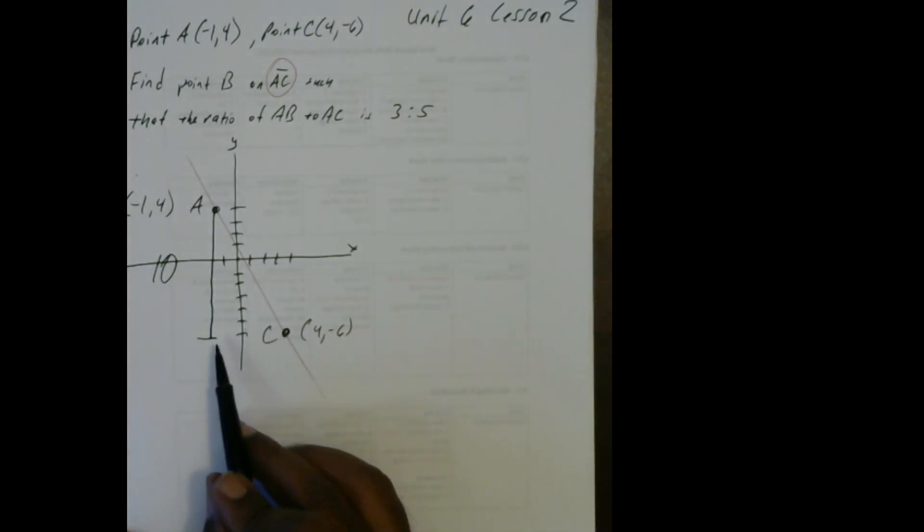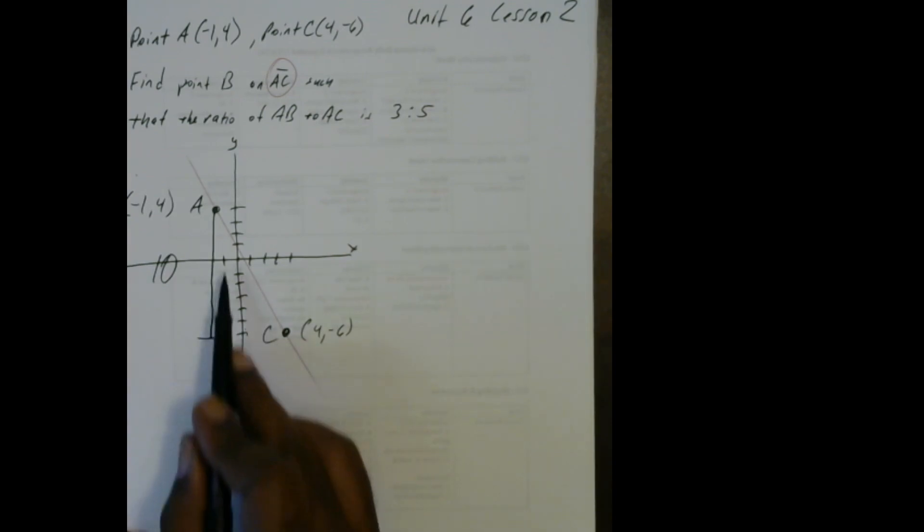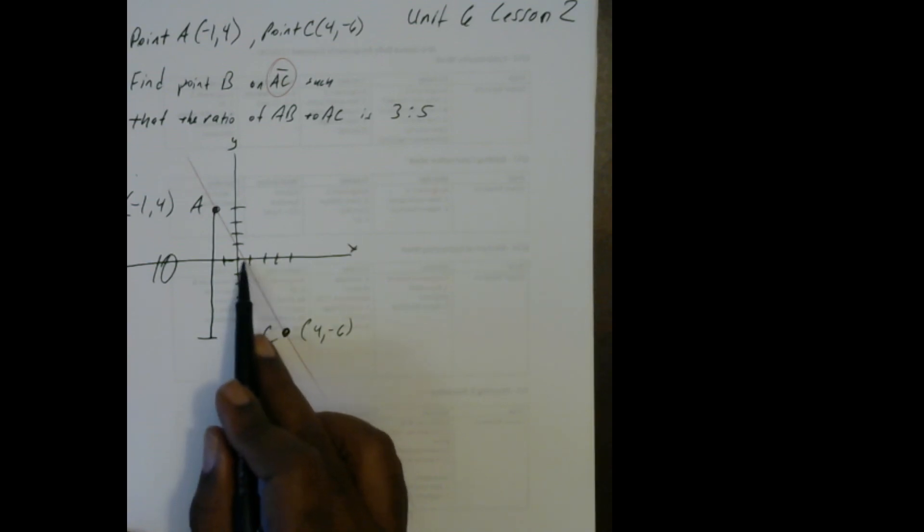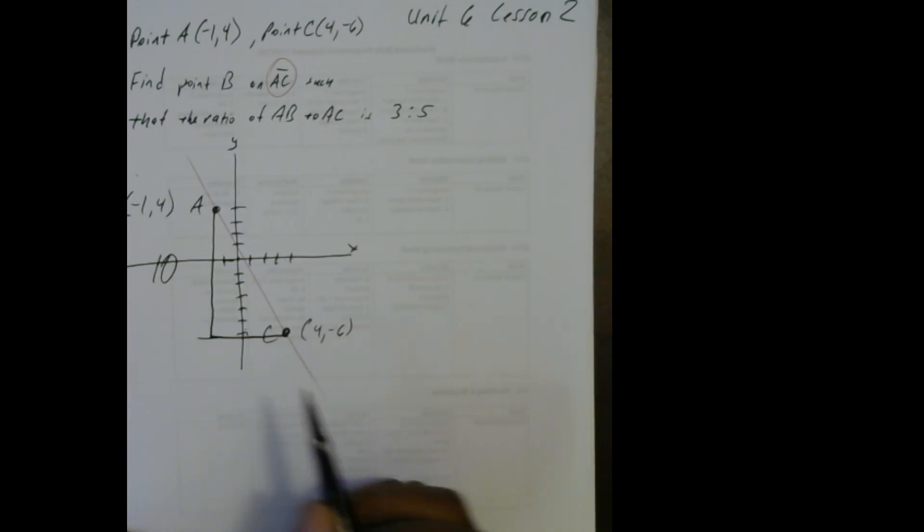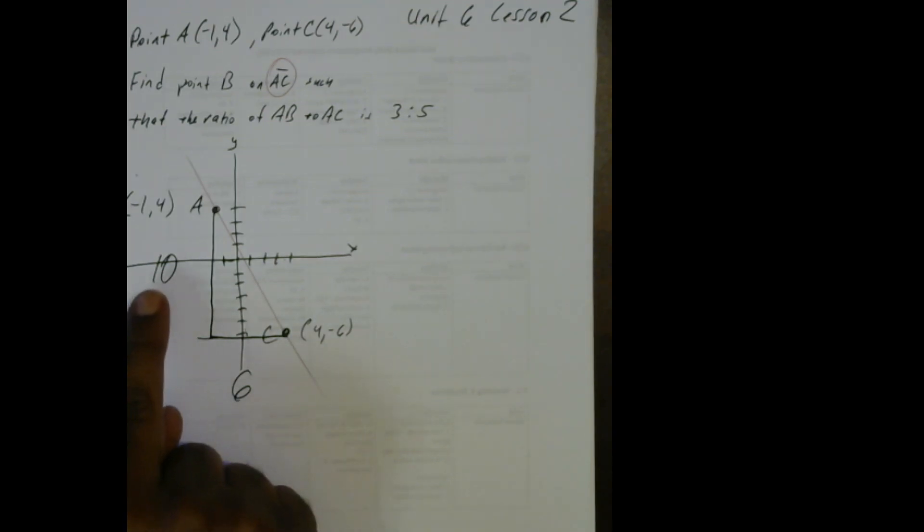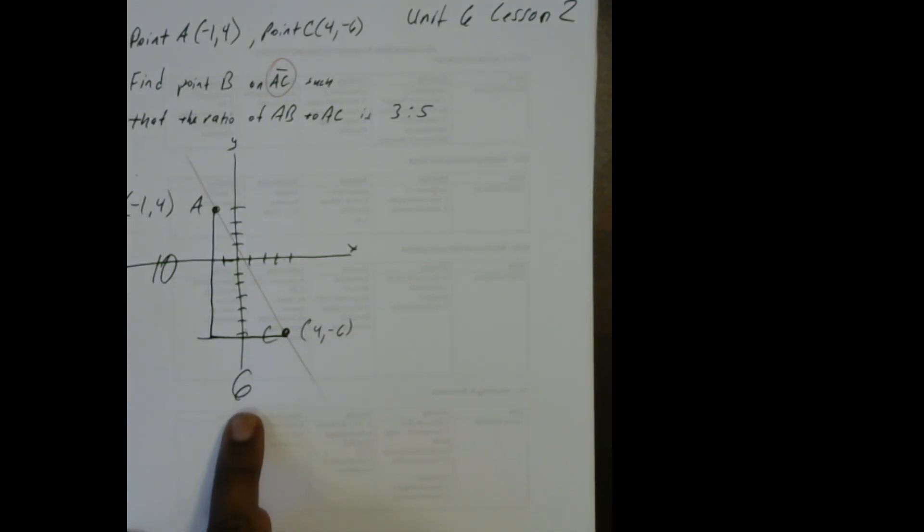Now to go from here to here, I have to go over 2, right here, over 2, and then 4 more. So 2 and 4 make 6. So right now I'm using a ratio of 10 to 6.